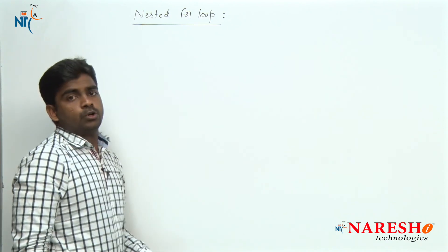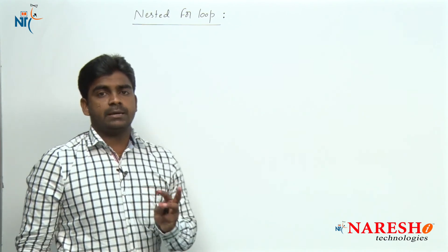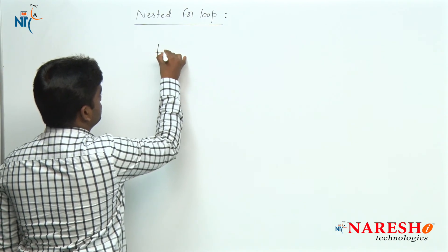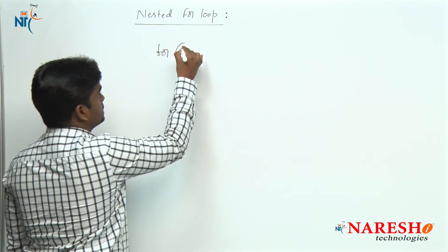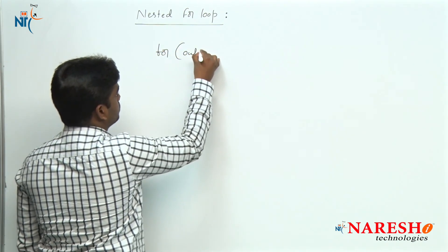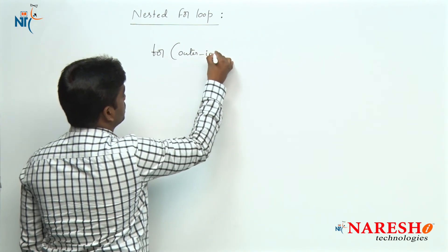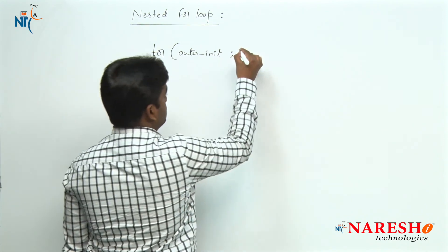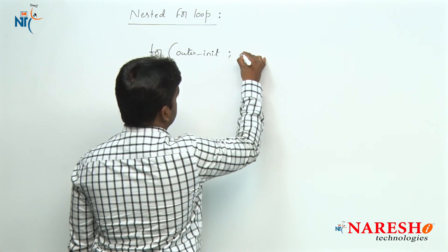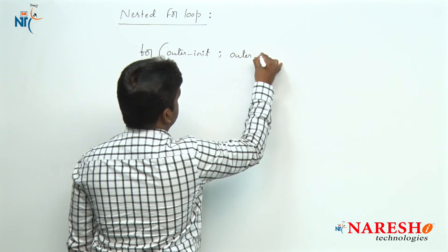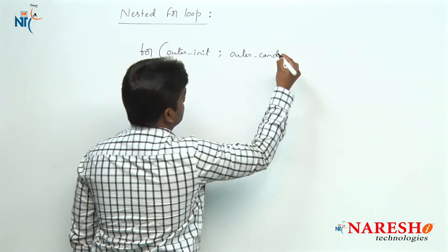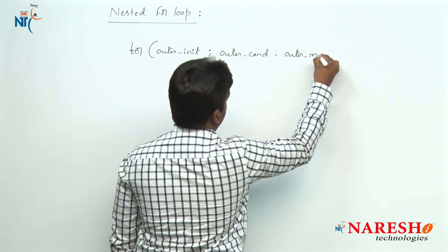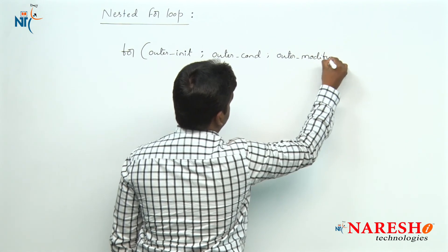Generally the for loop has three types of statements. The first one is initialization. Here this is the outer loop, so we have outer loop initialization, outer loop condition, and outer loop modify — increment or decrement.